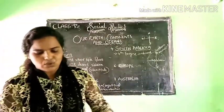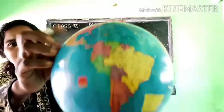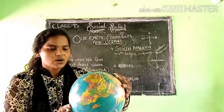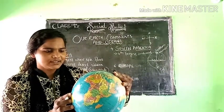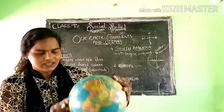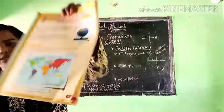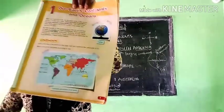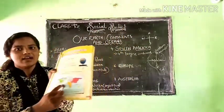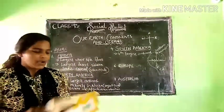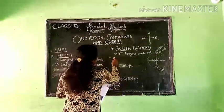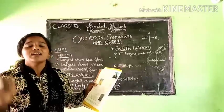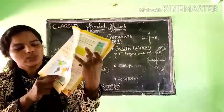Looking at the globe, this is North America and this is South America. North America and South America have a connection — there is a very narrow land between them. That narrow land is known as the Isthmus of Panama. The Isthmus of Panama connects North America and South America.